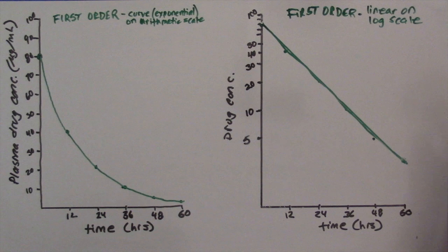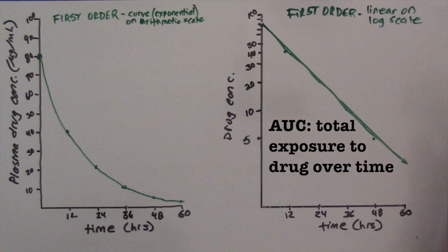As an aside, the area under this line is called the area under the curve, or AUC, and it represents the total exposure of the person to the drug over time.